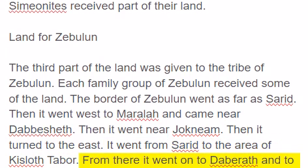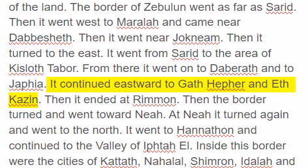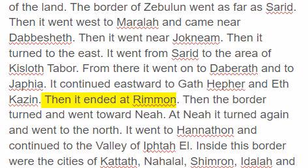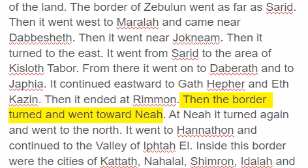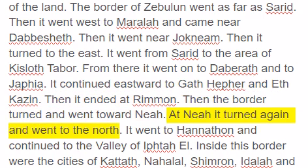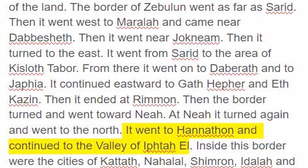From there it went on to Dabarath and to Japhia. It continued eastward to Gath-Heper and Eth-Kazin. Then it ended at Rumen. Then the border turned and went toward Ni. At Ni it turned again and went to the north. It went to Hanathon and continued to the valley of Ifta-al.